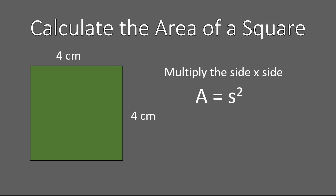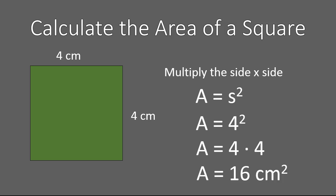Let's go ahead and calculate. The area of this square is four to the power of two — or in other words, four times itself — which gives us 16 square centimeters. There are 16 squares that would cover over this square. That's what area of a square means: how many little squares that are one unit by one unit would it take to cover this four by four square.